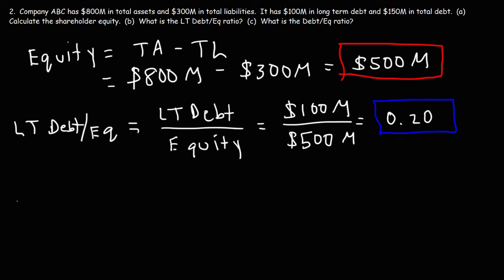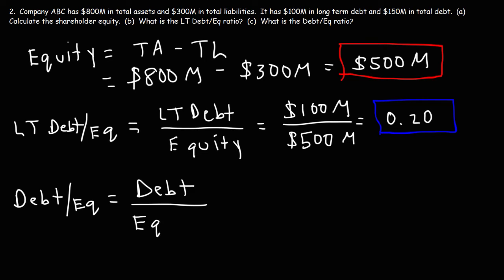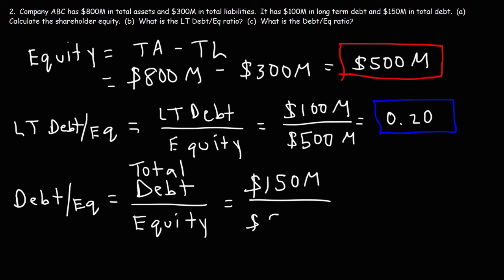Now let's move on to Part C and calculate the debt-to-equity ratio. This is the total debt divided by the shareholder equity. The company has $150 million in total debt and $500 million in equity. So 150 divided by 500 is 0.30. That is the debt-to-equity ratio for this company.